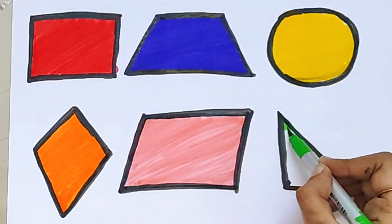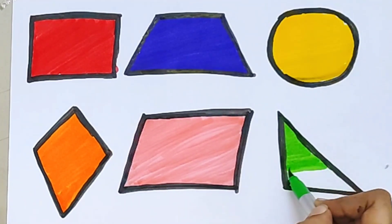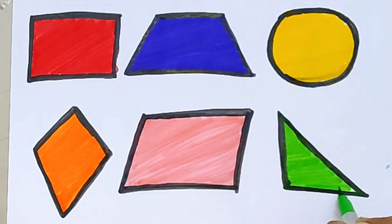What color is this? This is a green color. Green triangle.